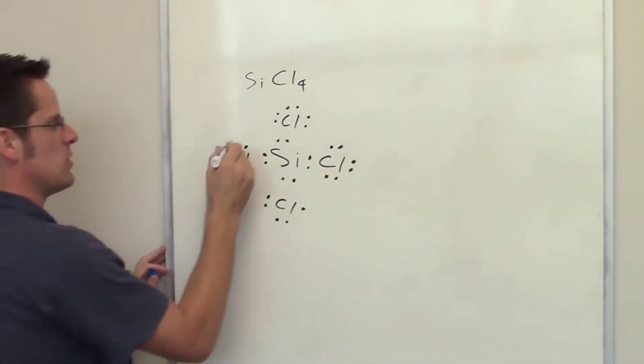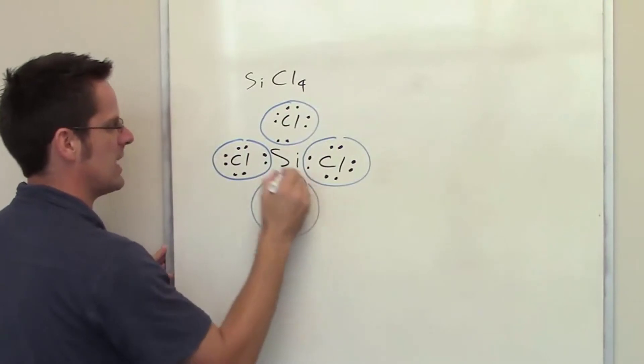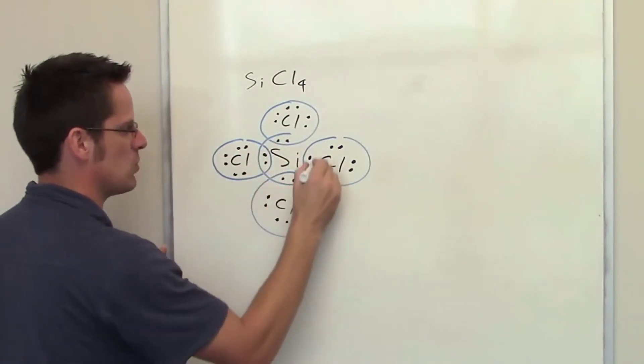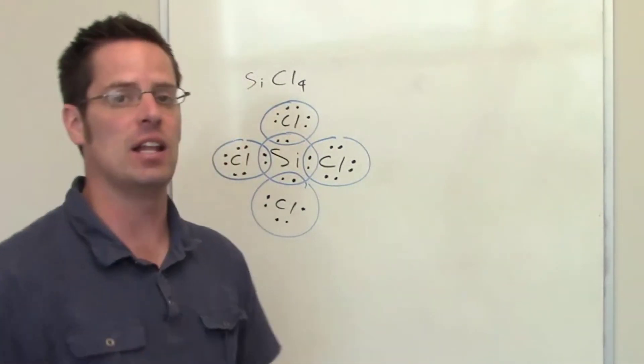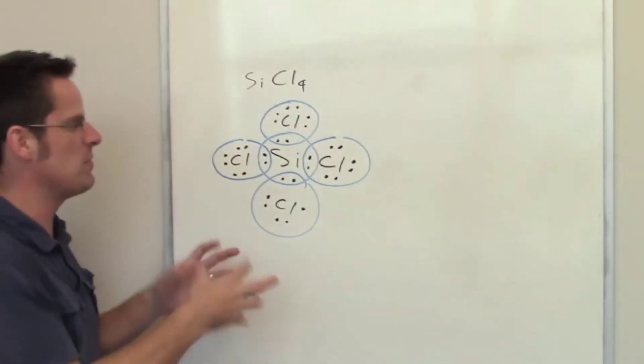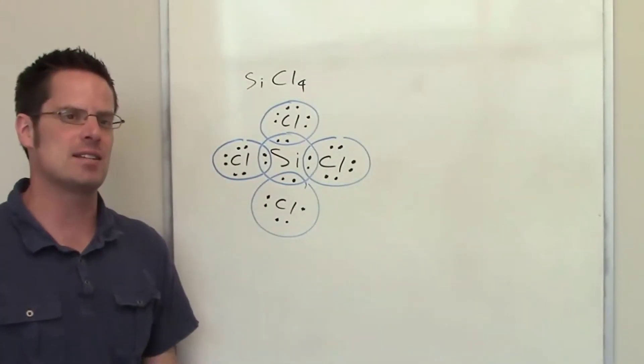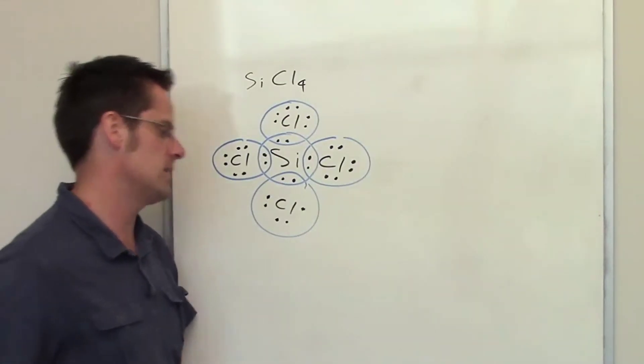You'll also notice that if you draw a circle around each of the chlorine atoms, as well as the silicon atom itself, you'll notice that each one of these different atoms feels as if it has eight electrons around it. That's what sharing can do for you as an element. So each of them feels like a noble gas even though there aren't, truly speaking, enough electrons for each of them individually to have eight valence electrons.